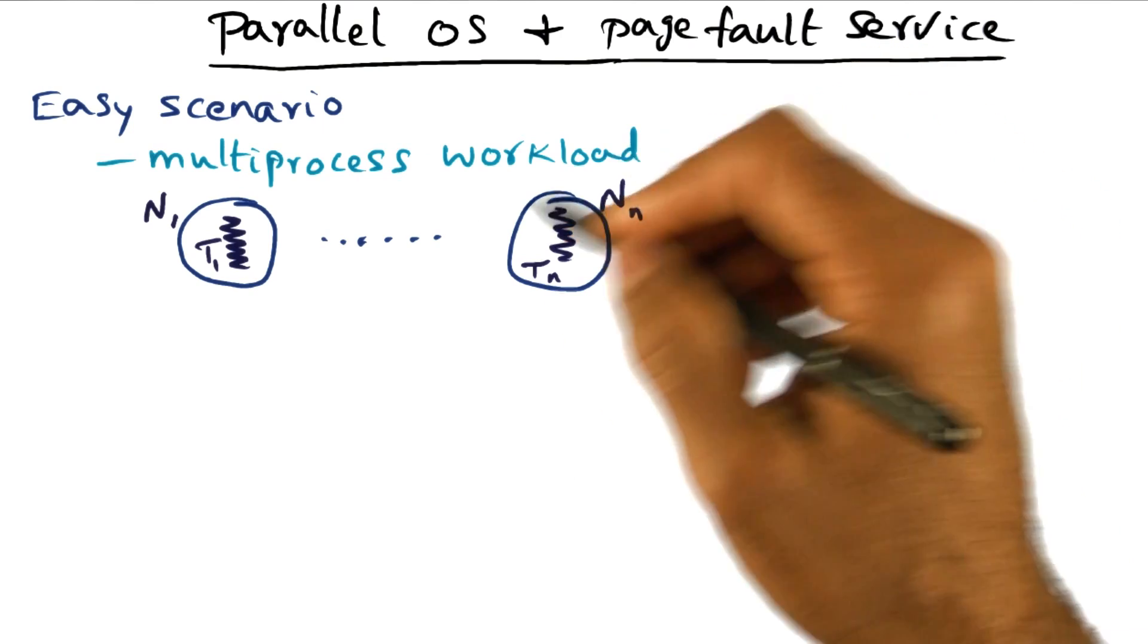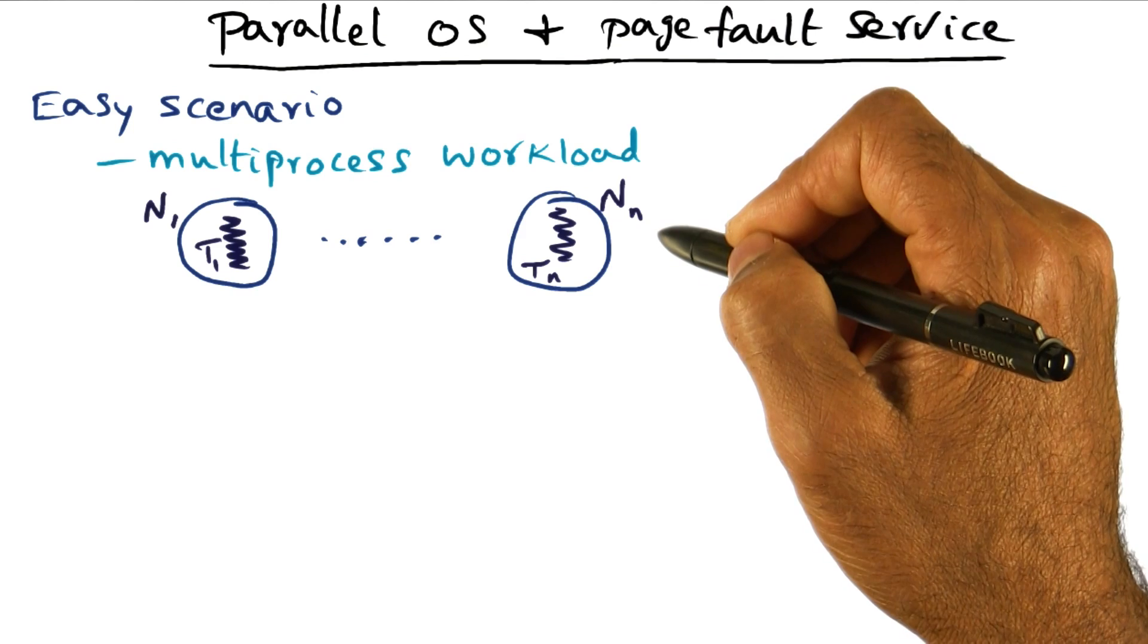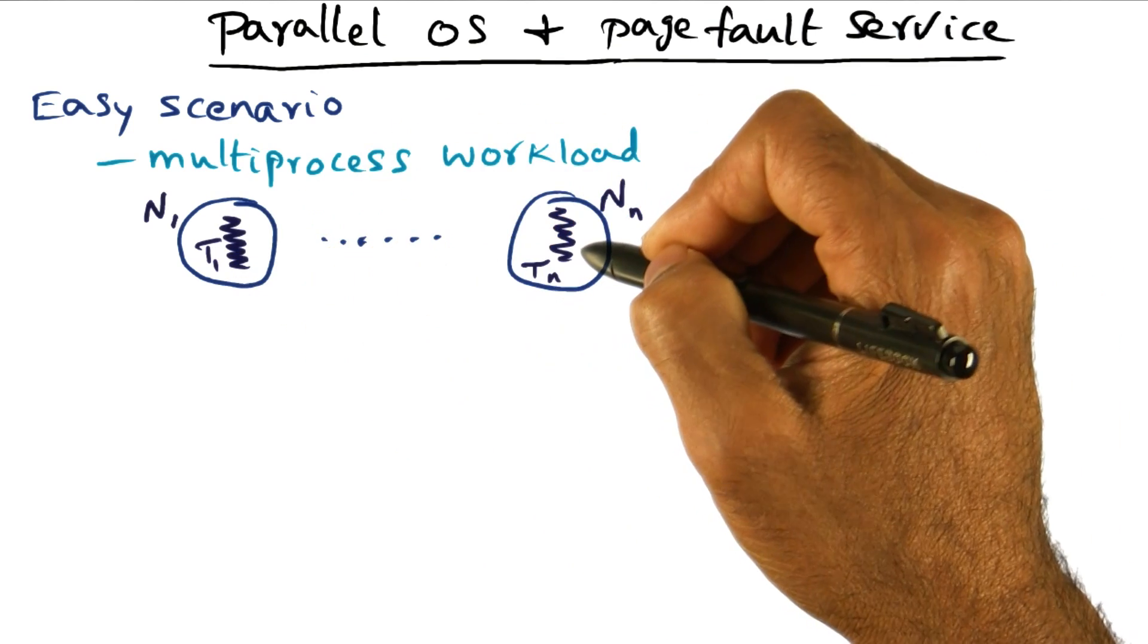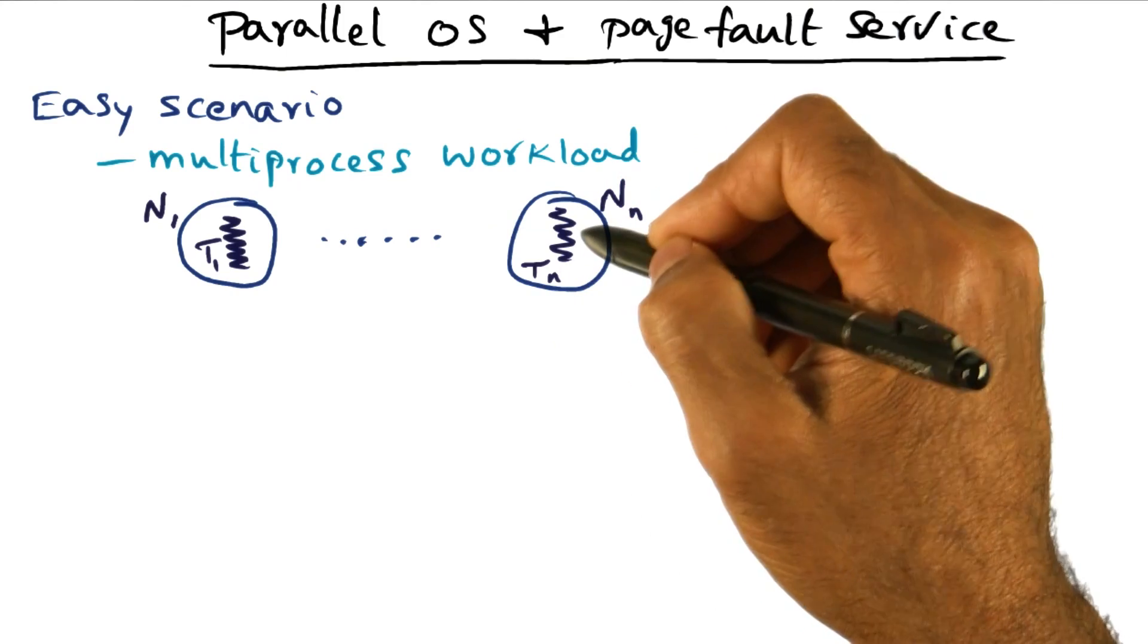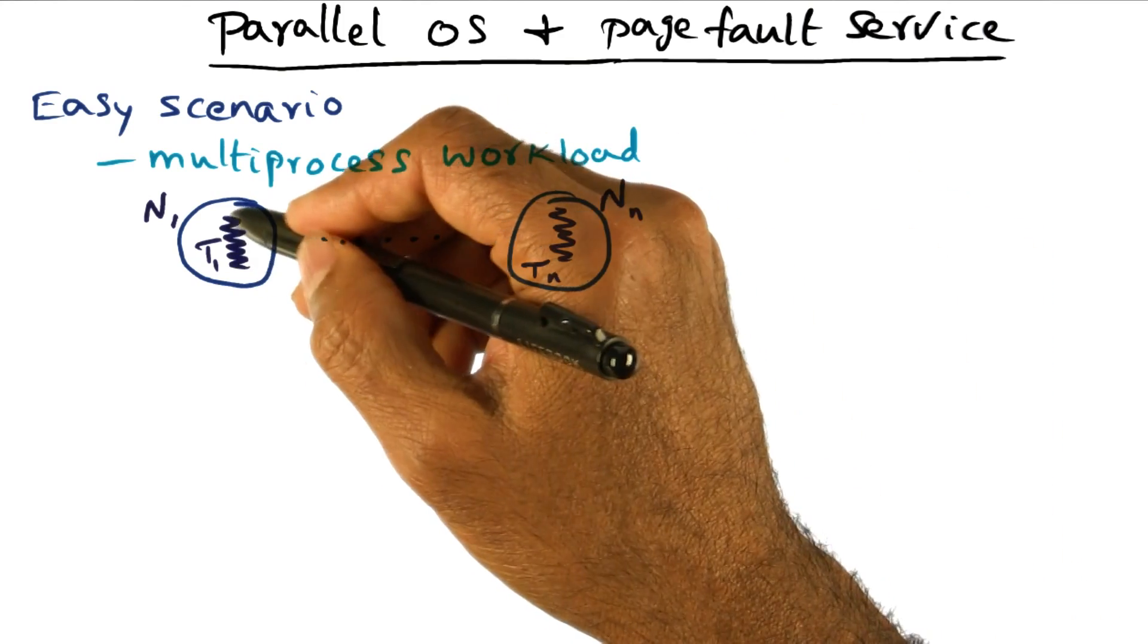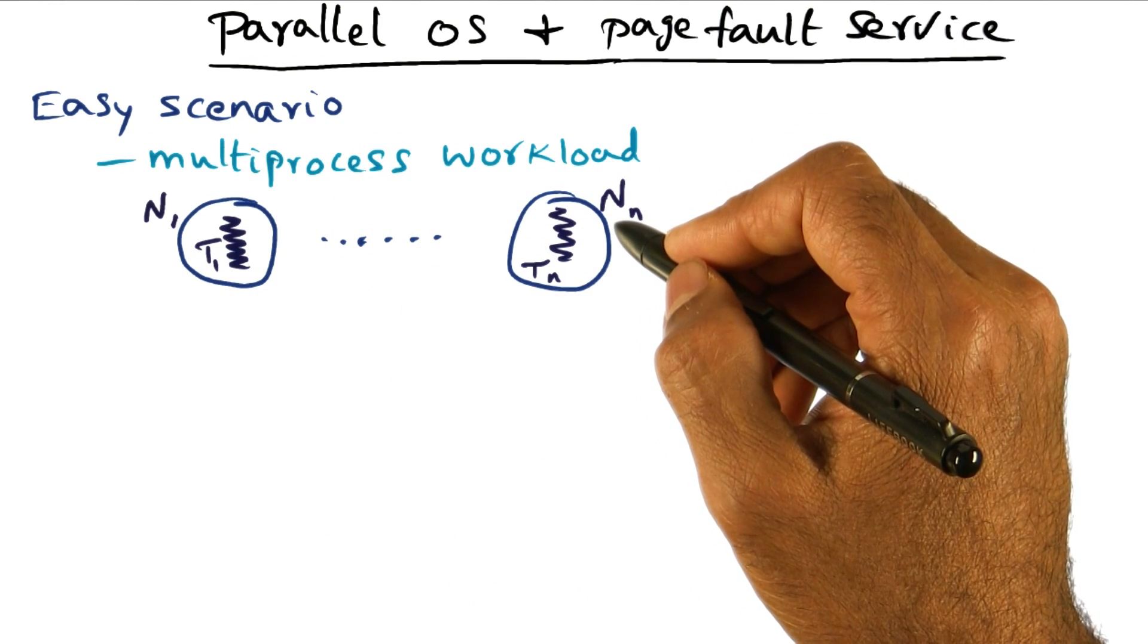Here, you have threads executing on all the nodes of the multiprocessor, but these threads are completely independent of one another. Think of this as a separate process, an independent process. Maybe you have a web browser here, a word processor here, and so on. They are completely independent processes.